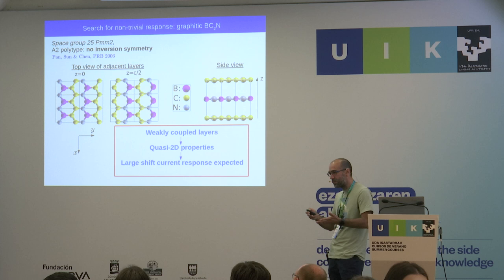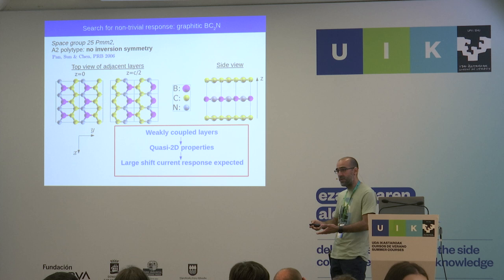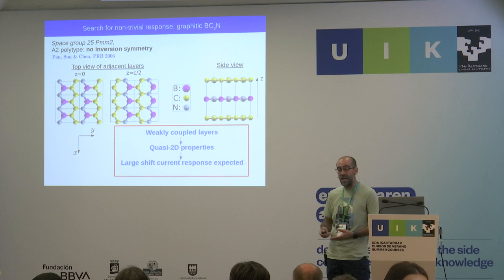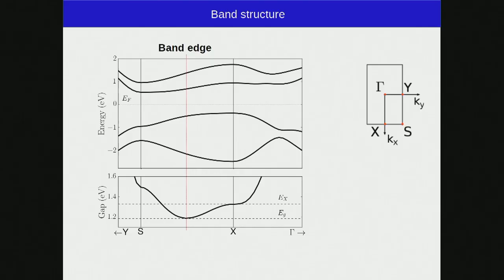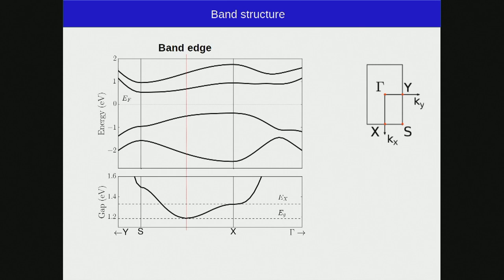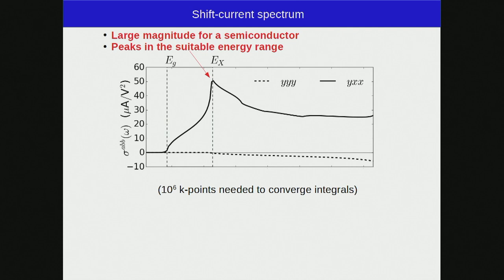One could use the shift current as a fingerprint to distinguish the polytypes: measuring an effect that requires broken inversion symmetry would confirm which structure was synthesized. The structure is similar to graphene but with zigzag chains of boron and nitrogen atoms replacing carbon in some stripes. The band gap of about 1.2 eV lies not at a high symmetry point but in the middle of the SX line, and there is some flatness near the X point where other transitions kick in.